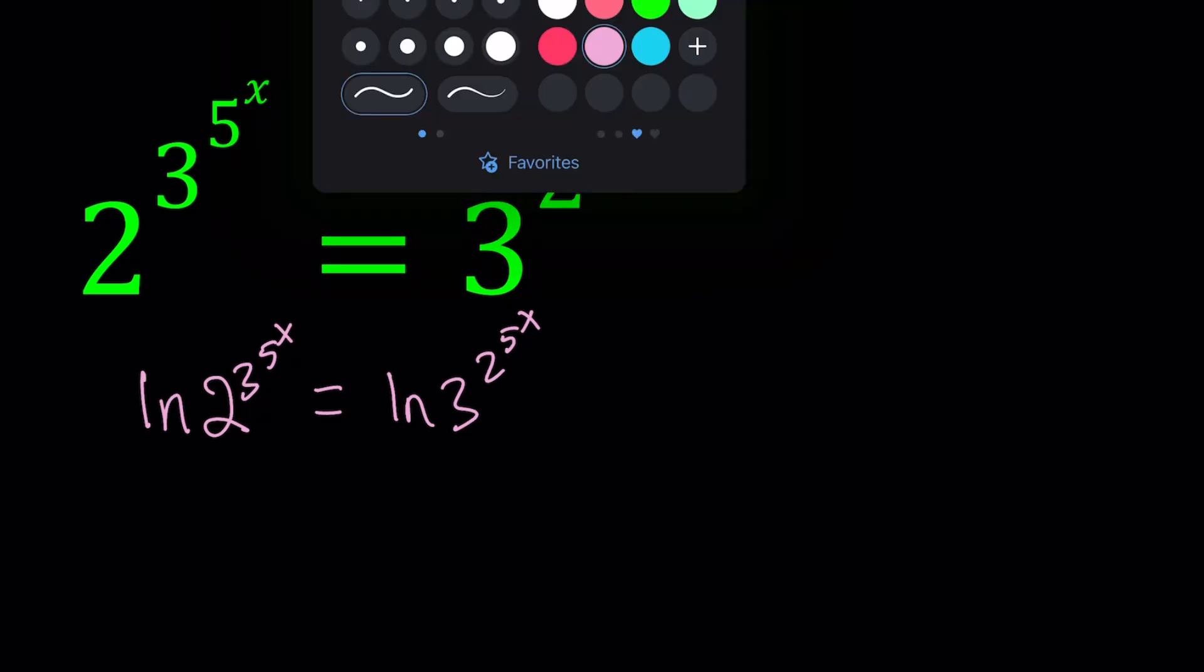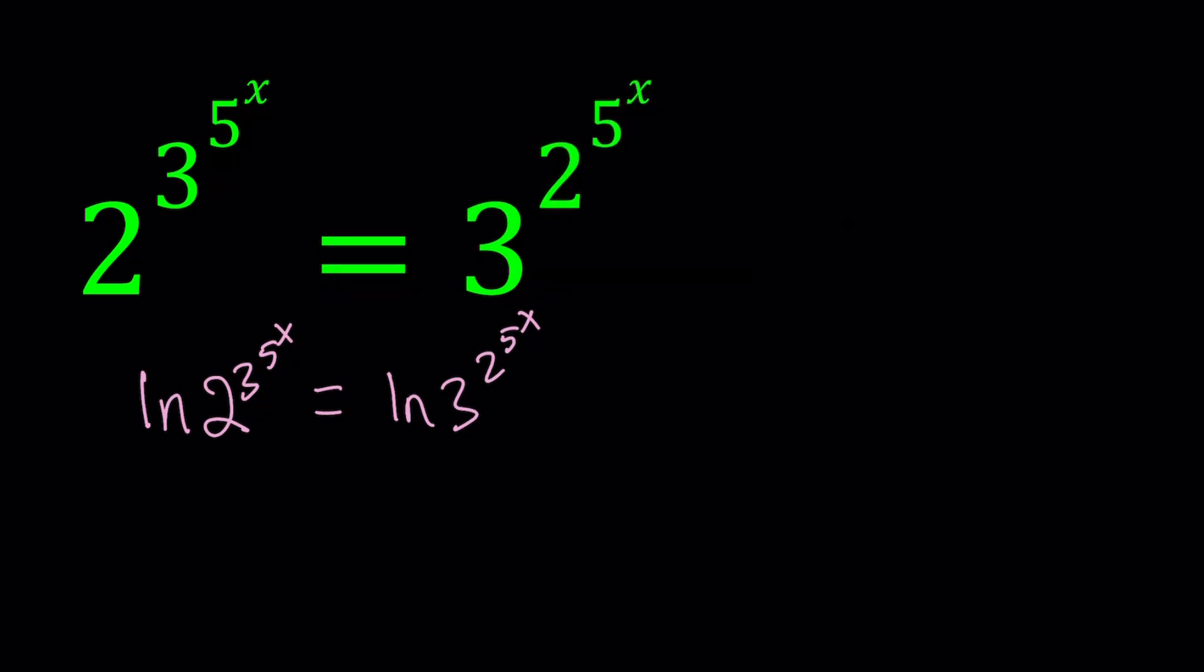Now when you ln both sides, you're not getting rid of the exponents, but they're kind of moving to the front, like this. So those are the exponents. And then from here we get the following.